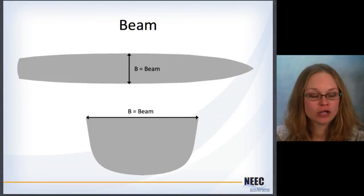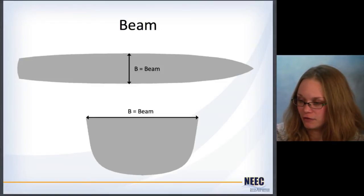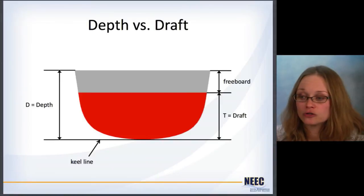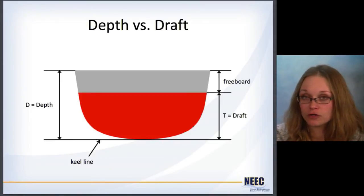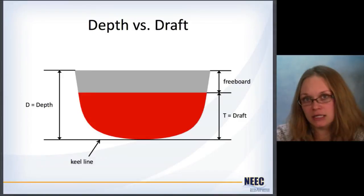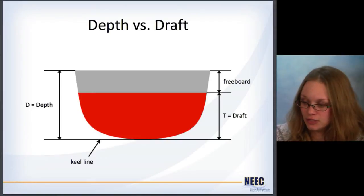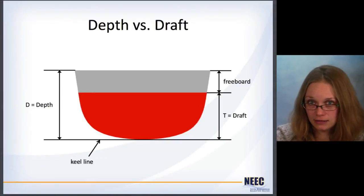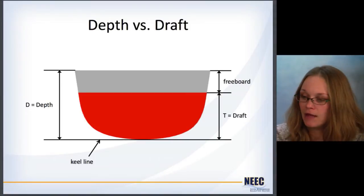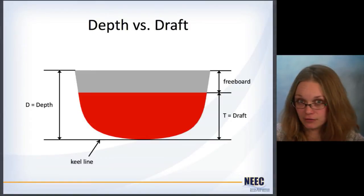Beam is the width of the ship — it is almost always just the maximum beam, which is almost always at midships. There are two major vertical measures of the ship. One is depth: the overall height of the entire hull. But when you're looking at buoyancy, stability, and seakeeping, you're concerned more about how much of the hull is actually underwater — and that's draft. They're both measured from the keel line, which is the very bottom of the ship. The difference between the two is called freeboard, which becomes very important when we do stability later on.